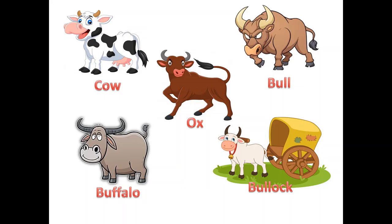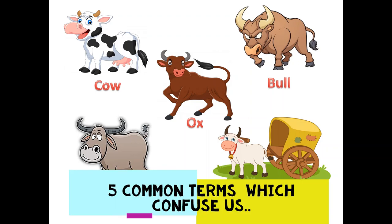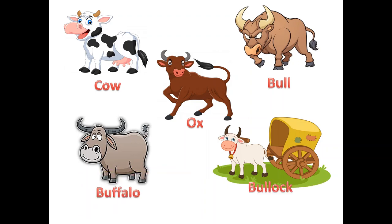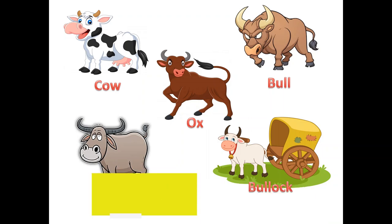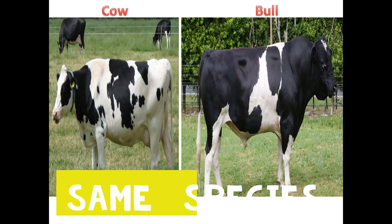Hello everyone, welcome back to the channel. Today I'm going to talk about five interesting animal terms which often confuse us: cow, bull, ox, buffalo, and bullock. It was also an IES interview question. I've made a humble attempt to clear the confusion through this video — hope you find it useful, and if yes, consider subscribing for similar content.